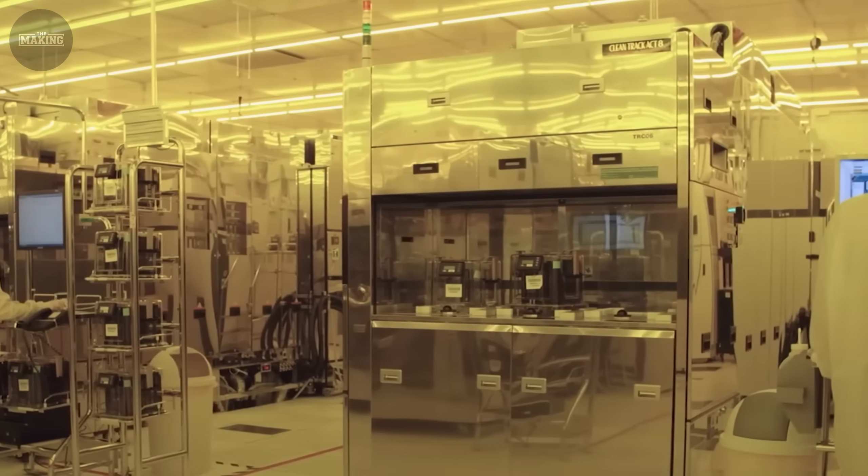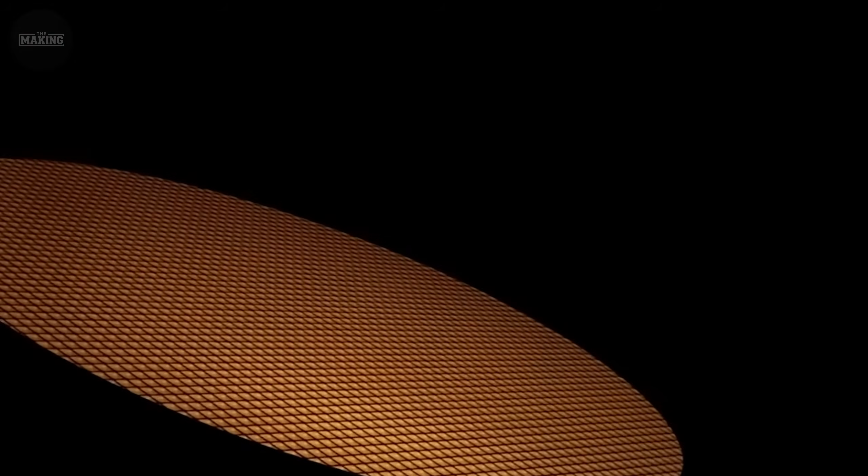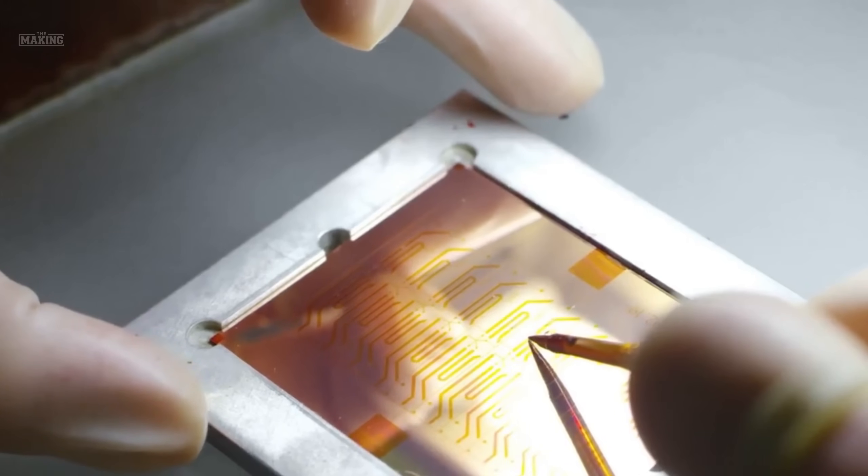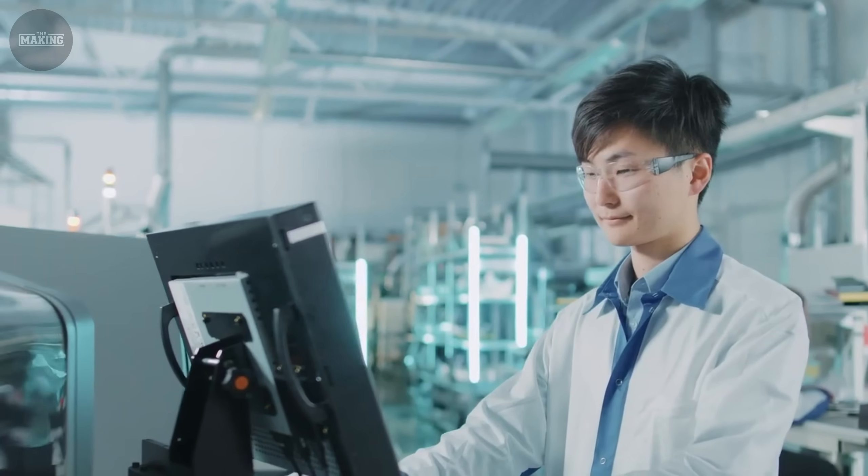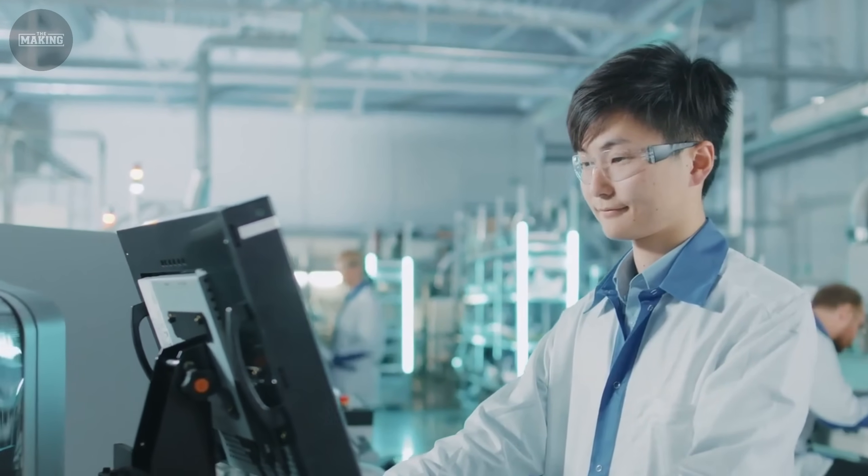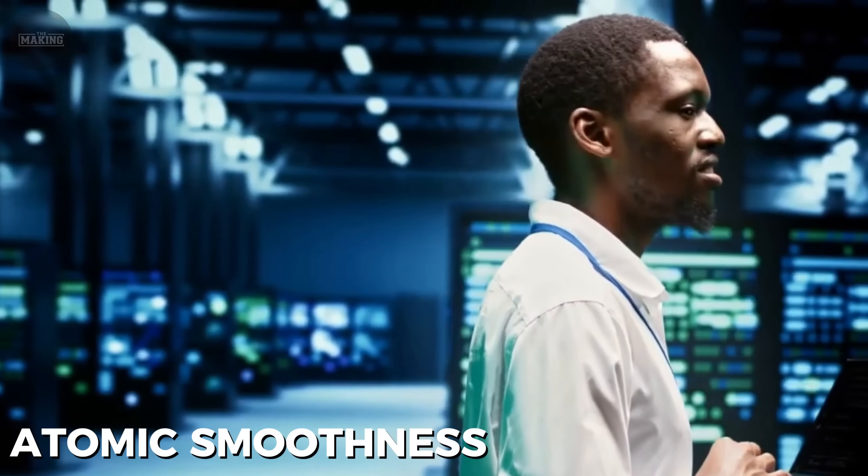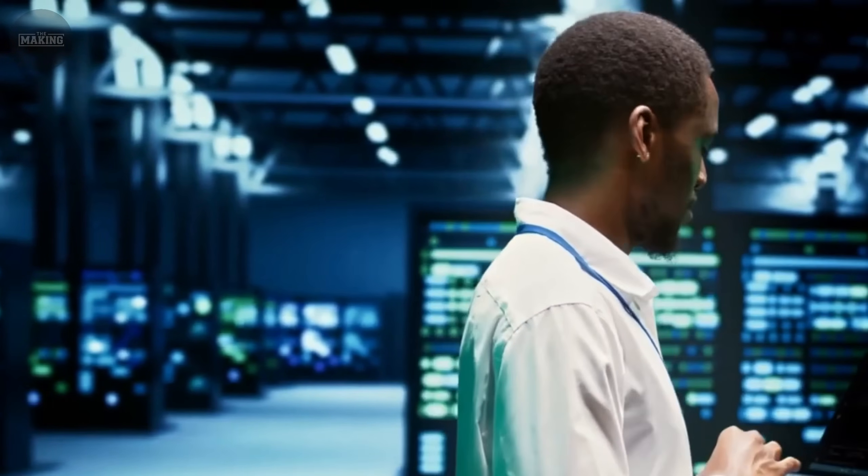Next comes wafer preparation in clean rooms that make surgical suites look dirty. The air gets completely replaced every 6 seconds. Workers wear full protective suits because even a single skin cell can contaminate the process. Each wafer gets polished to atomic smoothness. If a wafer was the size of Earth, the biggest bump would be 6 feet tall.